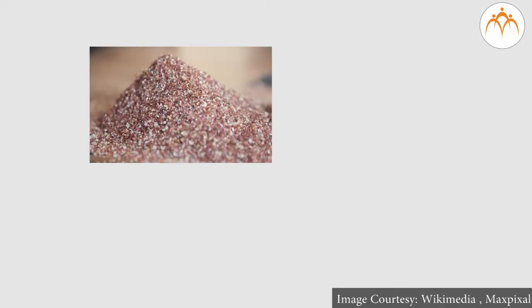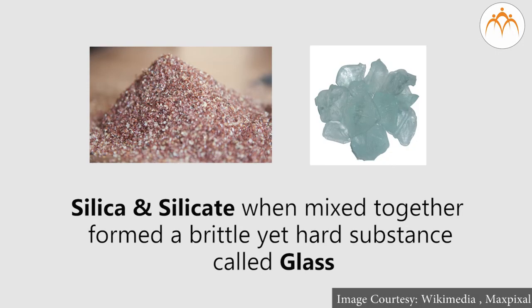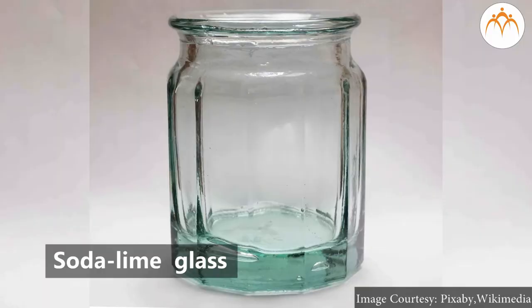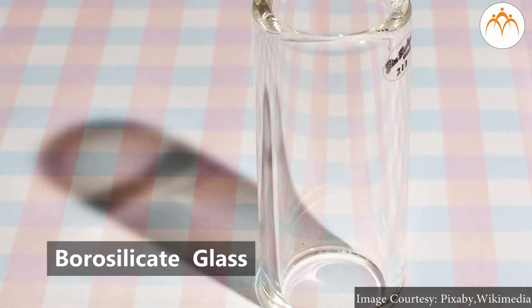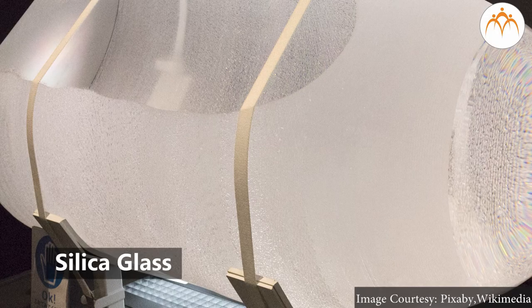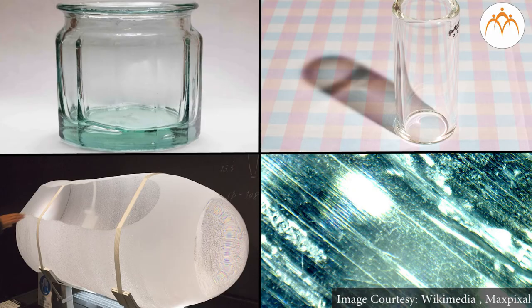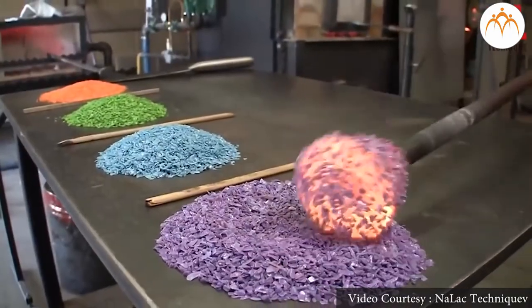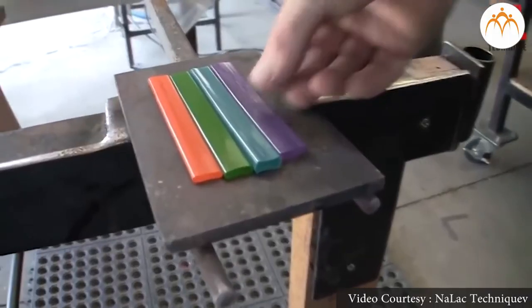Silica and silicate when mixed together form a brittle yet hard substance called glass. Depending on the proportion of silica (SiO₂) and other constituents, the following types of glass can be seen: soda lime glass, borosilicate glass, silica glass, and alkali silicate glass. In the glass fluid, specific substances can be mixed to form different colored glass.